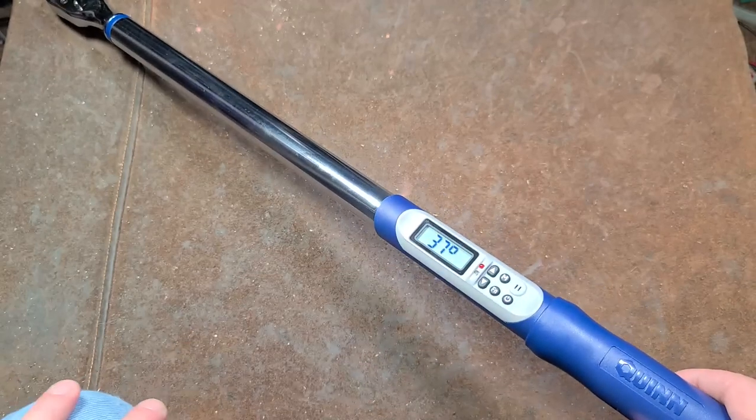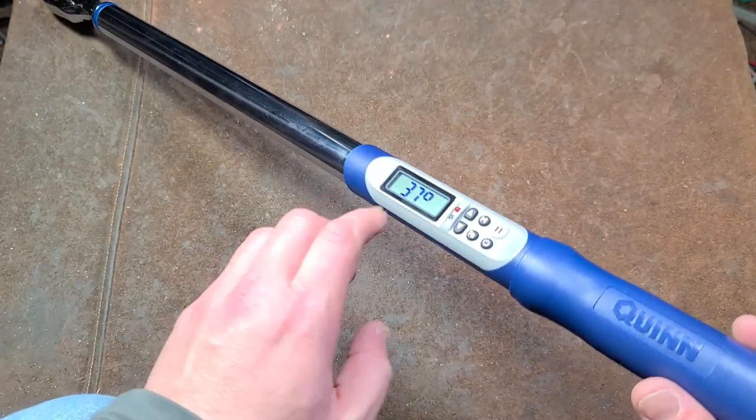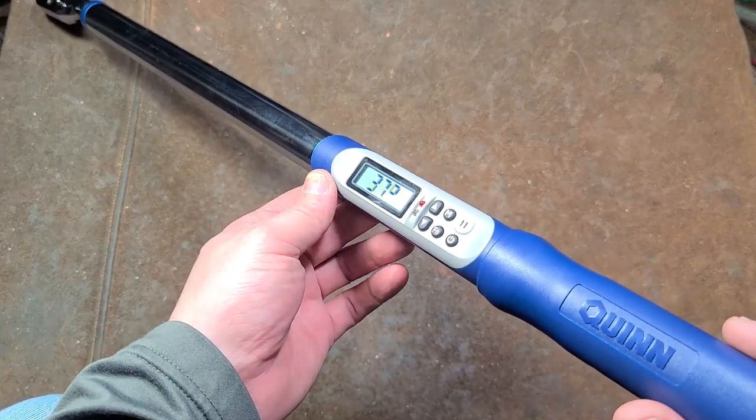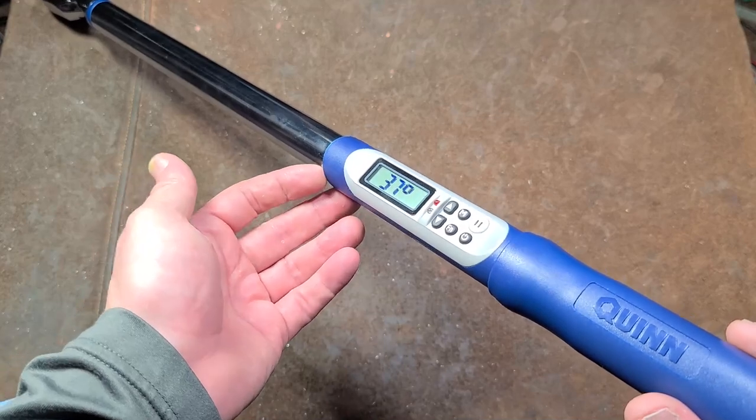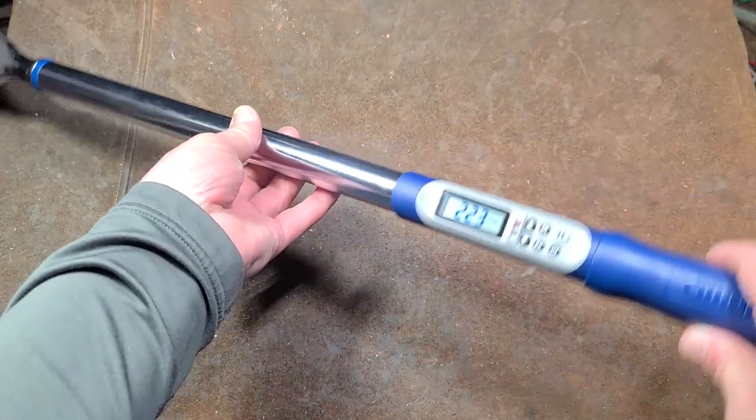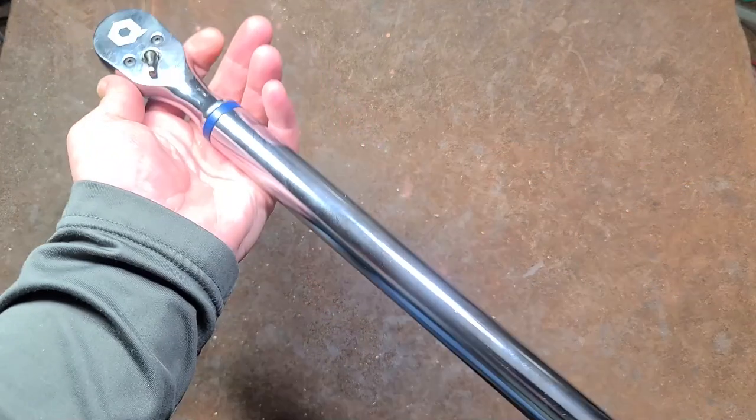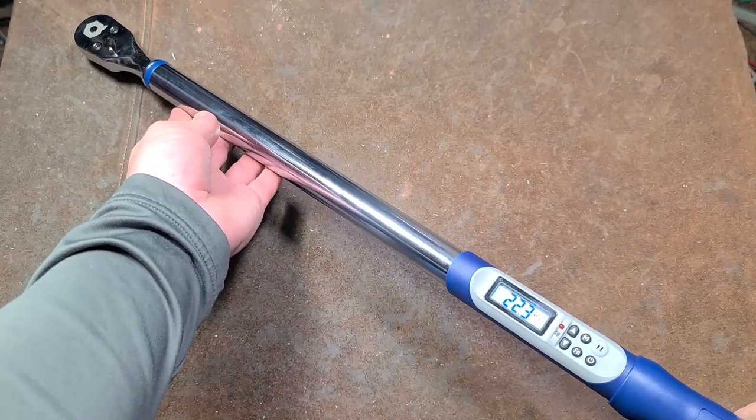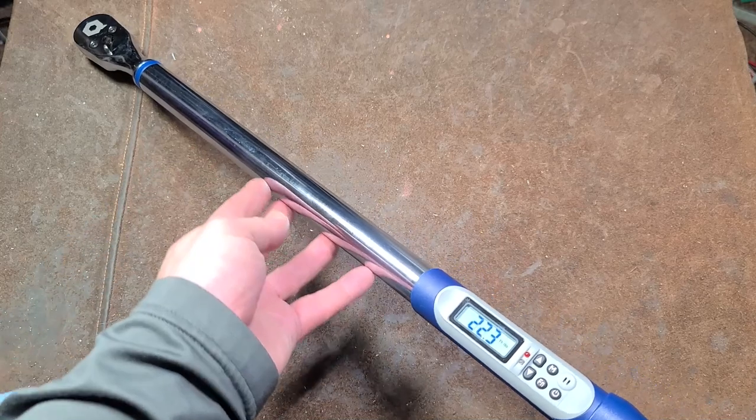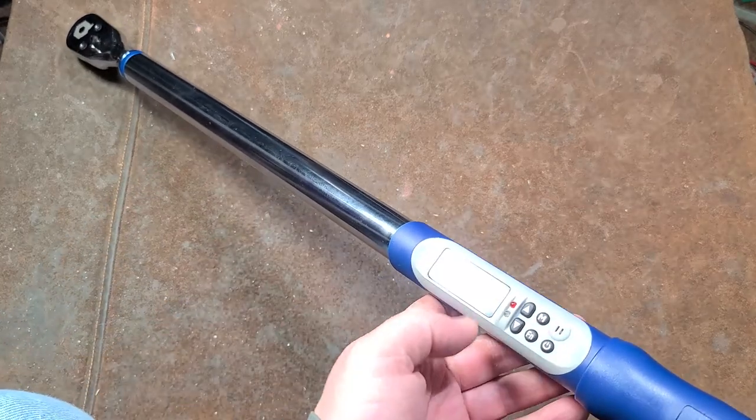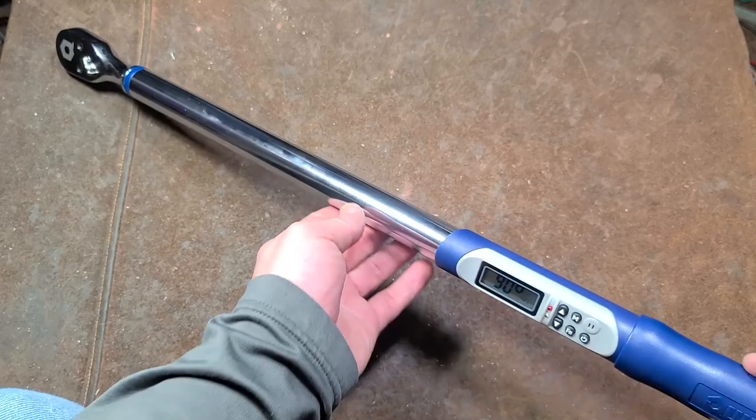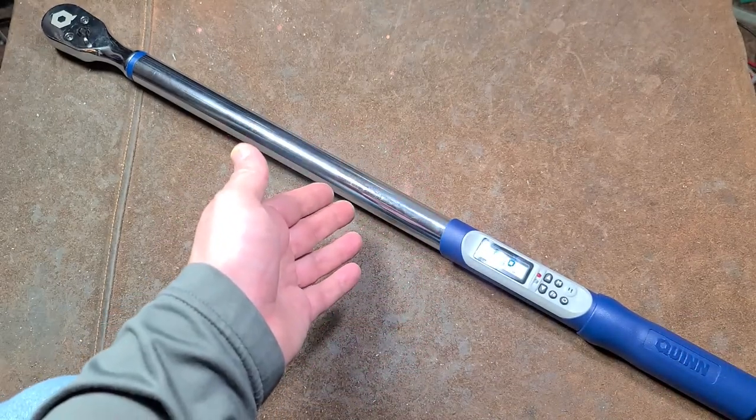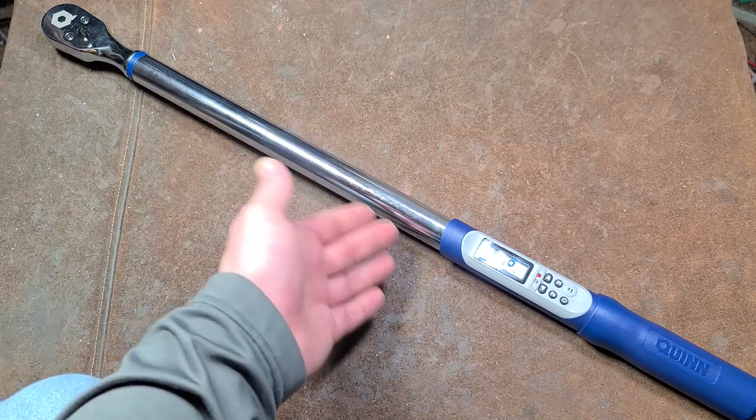It does not have a MEMS or microelectrical mechanical system nanotechnology gyroscope, which is what it would need to actually be able to tell that the wrench is turning. What it's doing is kind of doing some pseudo thing where it's detecting the increasing amount of torque and then displaying it as a degree measurement.